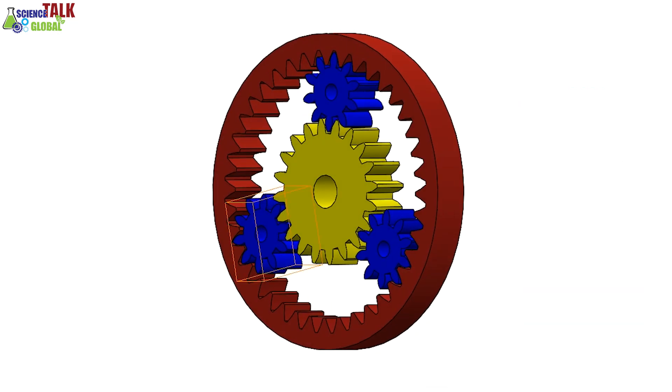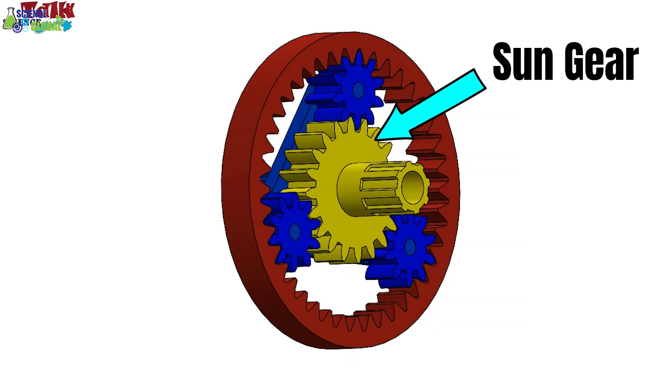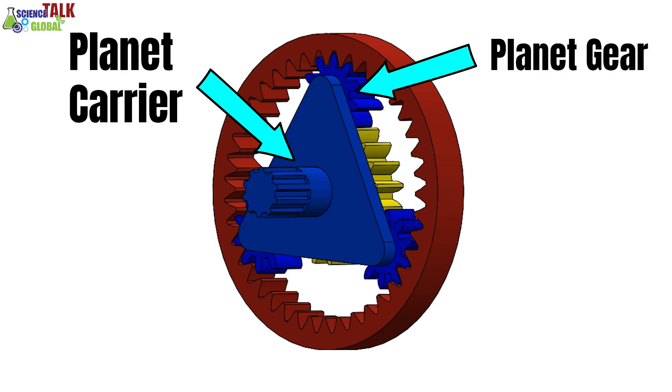But epicyclic gear train is more complex than this. The epicyclic gear train consists of sun gear, ring gear, and a planetary gear set.